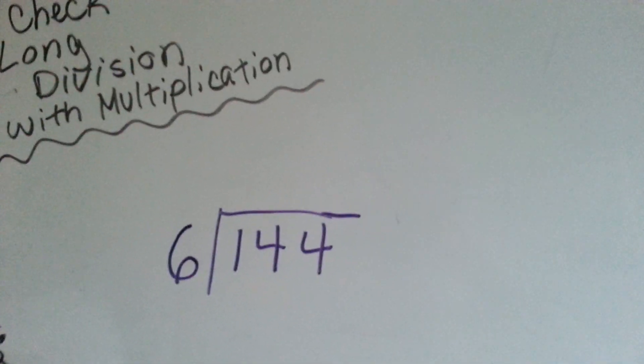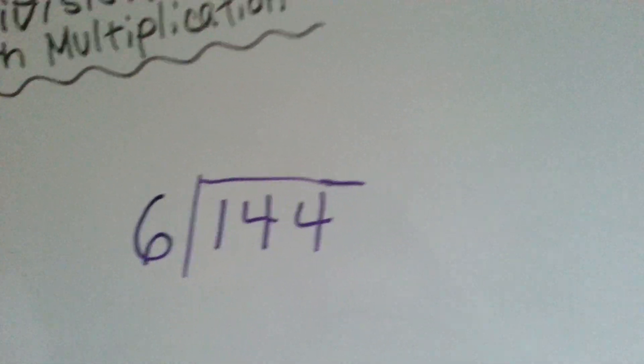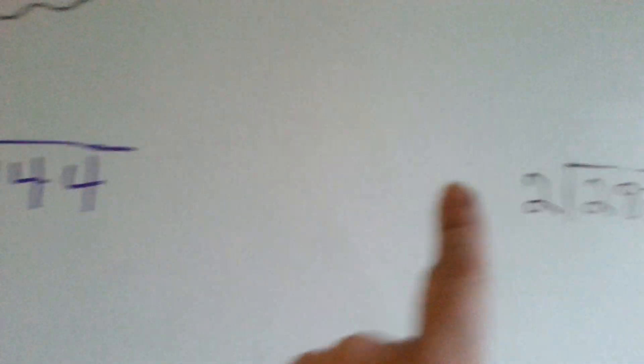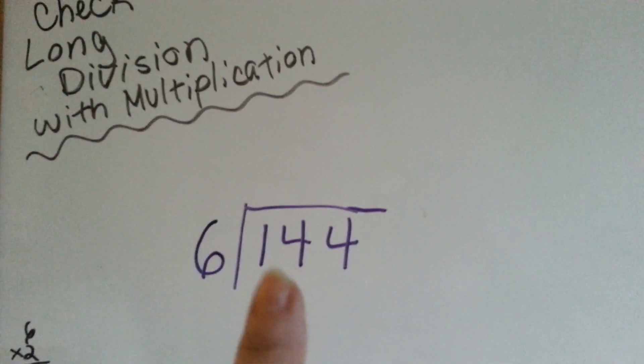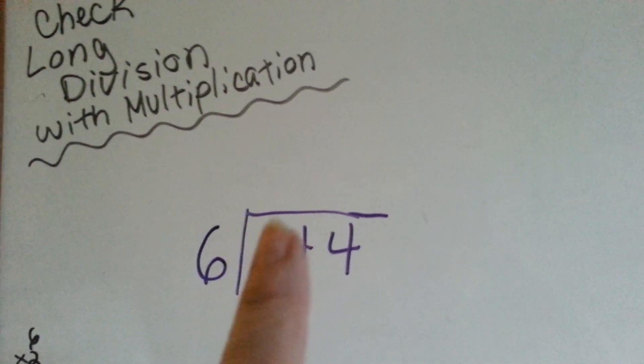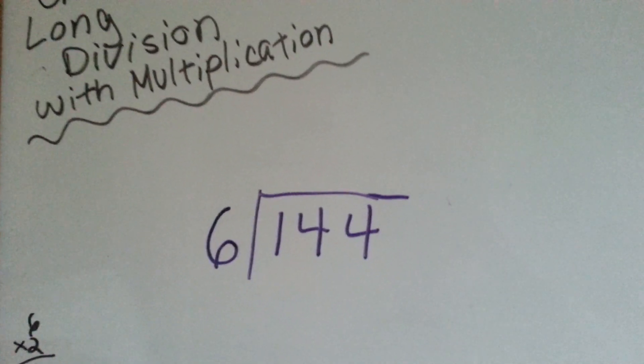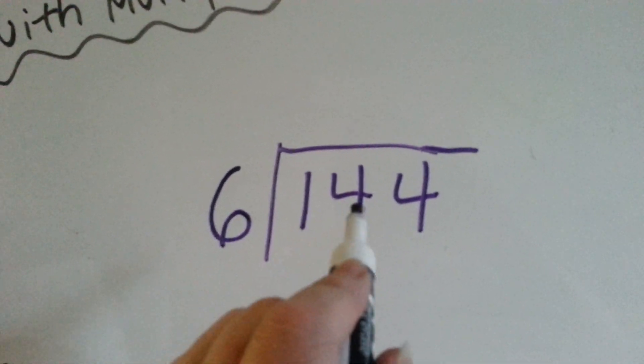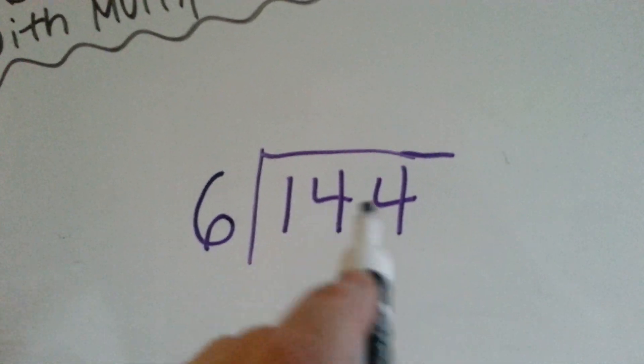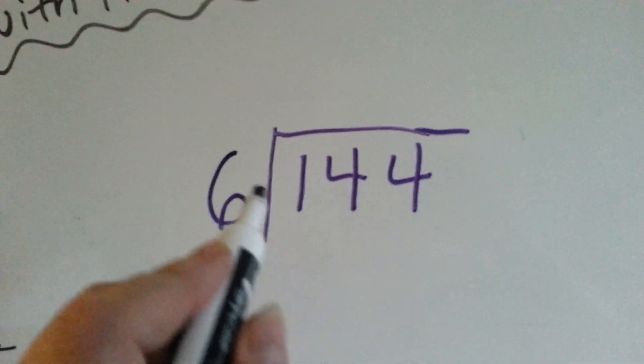Alright, we've got a long division problem here that we're going to do, and we have another one that has a remainder. This one doesn't have a remainder, it's going to come out even. But I'm going to show you how you can check to see if your answer is correct with multiplication. So let's take a look at this one. 6 goes into 144, 144 divided by 6.